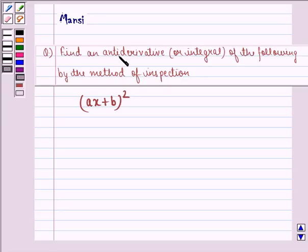The question says, find an anti-derivative or integral of the following by the method of inspection: ax plus b, the whole square.